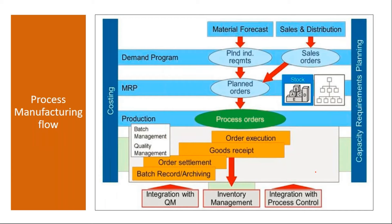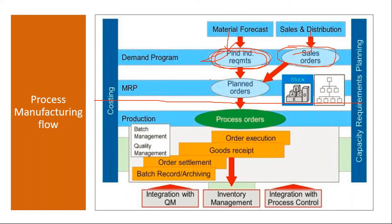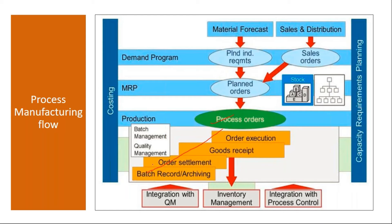This is the total flow — planning more or less remains the same as discrete manufacturing. You can do forecasting, which is entered into the system using PIRs (planned independent requirements), and also from the SD module your customer orders and sales orders come in. These are entered into demand management, then MRP is run and you get planned orders — the same as discrete manufacturing. Once you get the planned orders, they are converted to process orders, whereas in discrete manufacturing they were converted to production orders.